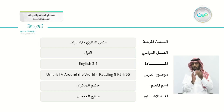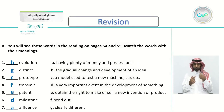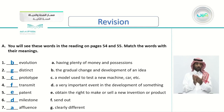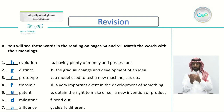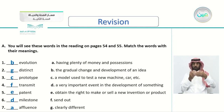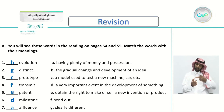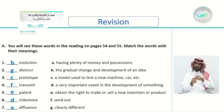So obviously we'll be reading today about TVs, but before we do that, let's revise what we previously took in the vocabulary lesson. These are some words that we learned the definition for — words we'll be finding today in the article. The word 'evolution' meaning the gradual change and development of an idea. The word 'distinct' meaning clearly different. The word 'prototype' — a model used to test a new machine. The word 'transmit' — to send.